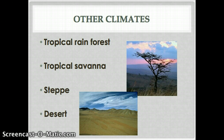Tropical savannas are warm areas in the tropics that don't receive as much rain. They generally have a wet season and a dry season. These are found mainly around the rainforest areas, around the Amazon in South America, and in the southern part of Mexico, just outside the tropical rainforests that exist in Central America.